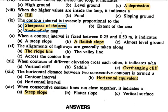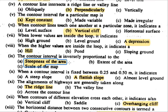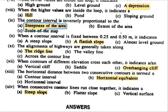Next question: When the contours of different elevations cross each other, it indicates an overhanging cliff or vertical cliff. Contour lines touch one another in the case of a vertical cliff, and if they intersect, it represents an overhanging cliff.